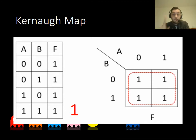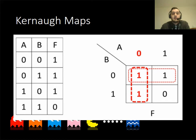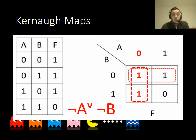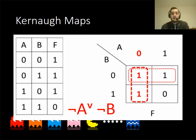This time we have the opposite. A must be off and B must be off. We know that represents a NOT gate, so that gives us NOT A and NOT B — two separate expressions. So we've got NOT A OR NOT B, which some of you may know as a NOR gate.